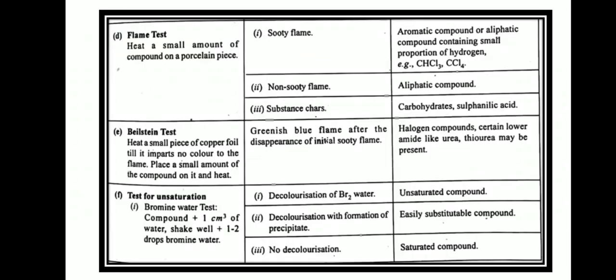After this we will do the flame test, which is generally used to see whether the compound is aromatic or aliphatic in nature. We heat a small amount of compound on a porcelain piece. If a sooty flame appears, it means an aromatic compound or an aliphatic compound containing a small proportion of hydrogen is present — such as chloroform or CCl4. If there is no sooty flame, it means the compound is aliphatic. If the substance chars, carbohydrate or sulfonic acid may be present.